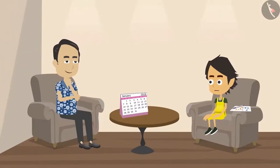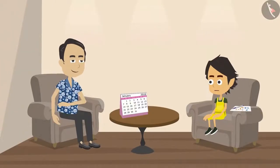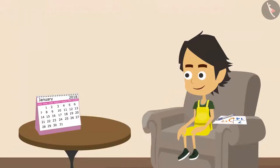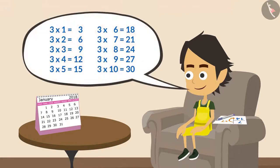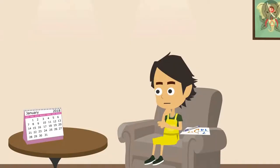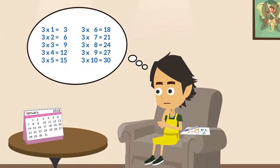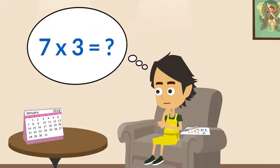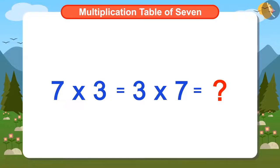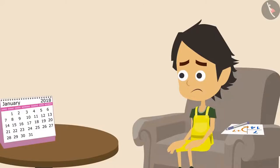Papa understood Ayushman's problem and asked if he knows the multiplication table of 3. Ayushman tells Papa that he knows the multiplication table of 3. Papa said that then Ayushman can easily find what 7 multiplied by 3 is. Ayushman starts thinking: if he knows the multiplication table of 3, how can he find the answer to 7 multiplied by 3? Papa told Ayushman that the answer to 7×3 would be the same as 3×7.